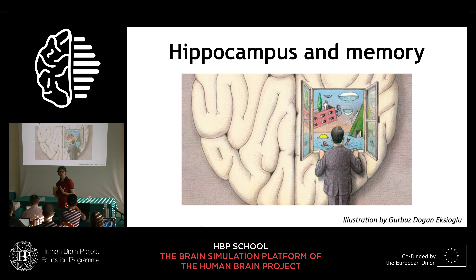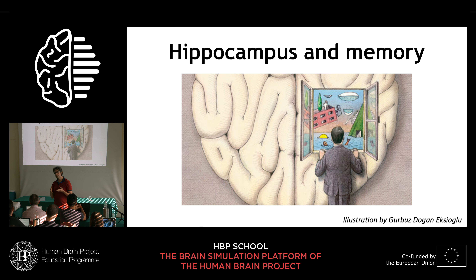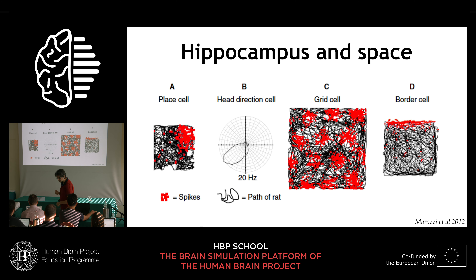What does the hippocampus do? It does many things. One of its most prominent features is that it plays a key role in memory — in particular, episodic memory: our memory of episodes and events that happen in space and time. The hippocampus also plays a role in keeping time, our perception of time, and our perception of space.